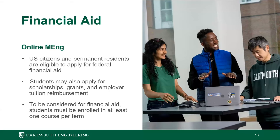As Dr. Santos mentioned, part-time enrollment is one course per term, and for most forms of financial aid, you need to be enrolled at least part-time. So just one course per term is all it takes for most forms of financial aid.